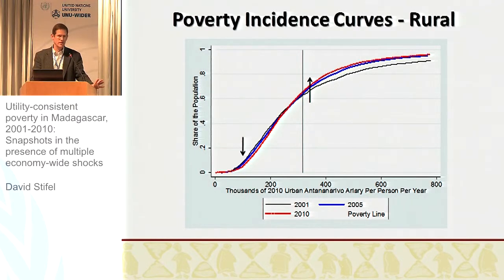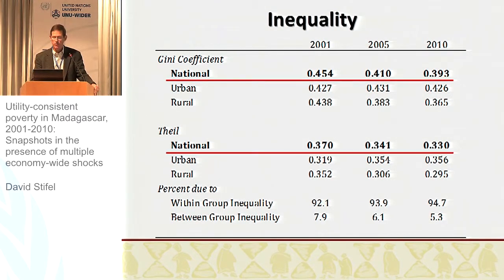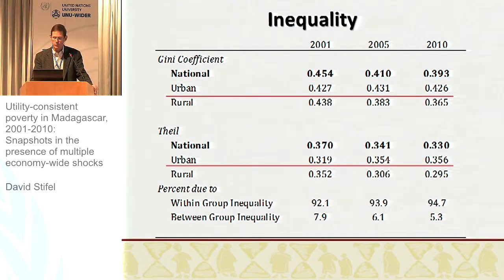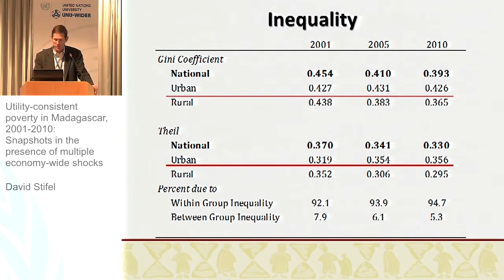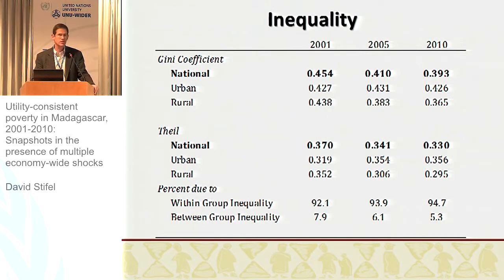Looking at inequality for context, we find that inequality over the course of the decade is decreasing. The Lorenz curves do not cross at the national level, but they do cross at the urban level, especially between 2005 and 2010 — hence we get different results using a Theil and a Gini coefficient. What is driving the decrease in inequality is in the rural areas, and much of inequality is explained within-group, which is not surprising given the large proportion of the population in rural areas.